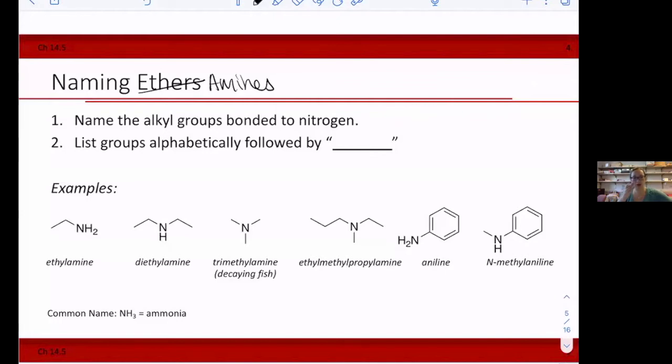So now we need to learn how to name our amines. These are going to be more similar to naming ethers. If you remember, we used the groups on either side of the oxygen and just named those groups and followed it by ether. For amines, we're going to name the alkyl group bonded to the nitrogen. So all of the different alkyl groups, we'll name them. And then we're going to list them alphabetically followed by amine.